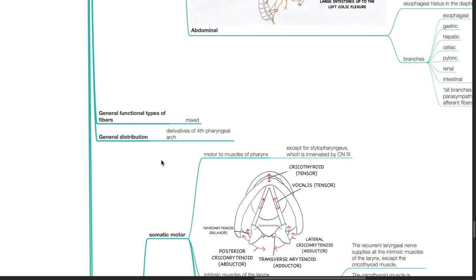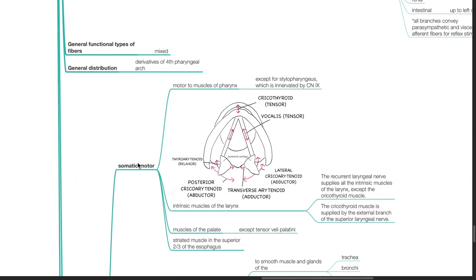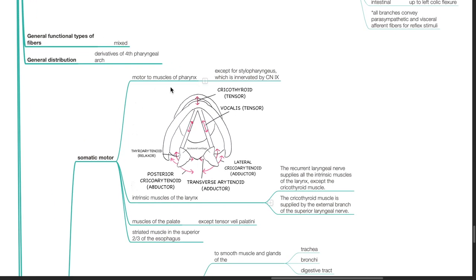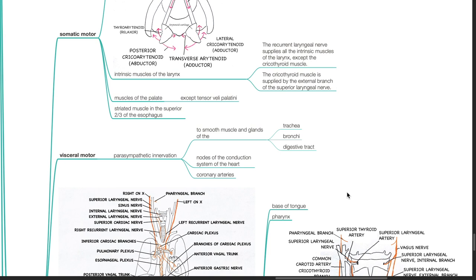Cranial nerve 10 fibers are usually mixed, and cranial nerve 10 supplies derivatives of the 4th pharyngeal arch. Main actions of the vagus nerve — somatic motor supply: motor to muscles of the pharynx except for the stylopharyngeus, which is innervated by cranial nerve 9. Intrinsic muscles of the larynx: the recurrent laryngeal nerve supplies all intrinsic muscles of the larynx except the cricothyroid muscle, which is supplied by the external branch of the superior laryngeal nerve. Muscles of the palate except for tensor veli palatini. Somatic motor supply also extends to the striated muscle in the superior two-thirds of the esophagus. Visceral motor: parasympathetic innervation to the smooth muscle and glands of the trachea, bronchi and digestive tract.